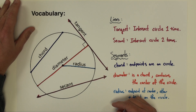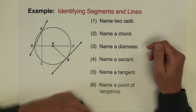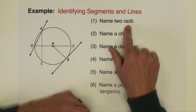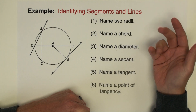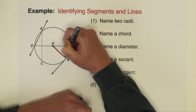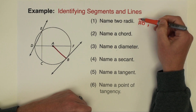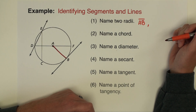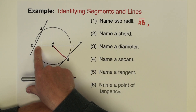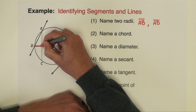Next we're going to do a little bit of practice identifying these different lines and segments. The first example problem asks us to identify the different segments and lines in the diagram. The first part wants us to name two radii — radii being the plural form of radius, so I want two different radius segments. The first one, maybe the most obvious, is drawn right here as a radius. I'm going to say AB. Proper notation for a segment is just a bar above the two endpoint letters. The other radius we can name is going to be either side of this diameter — I'll go ahead and name AD.